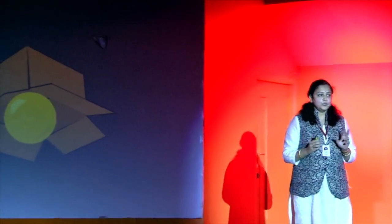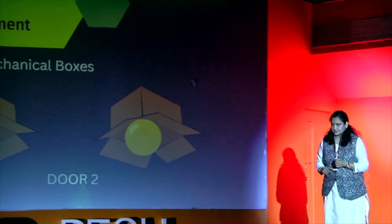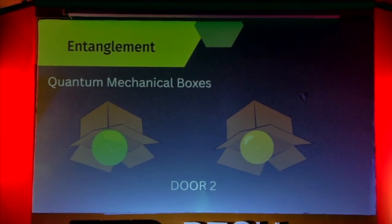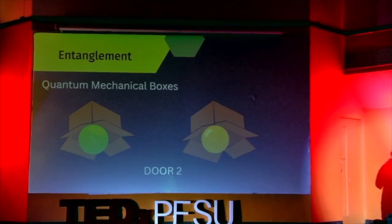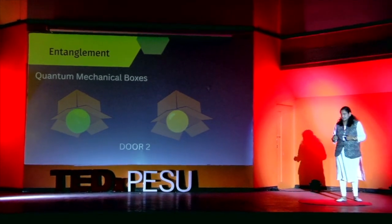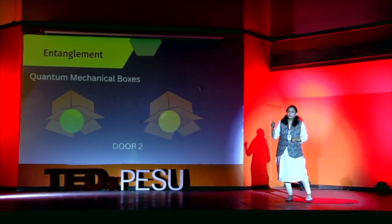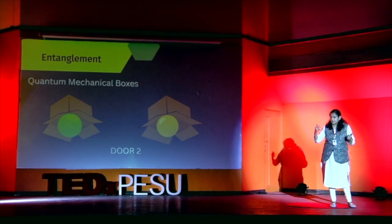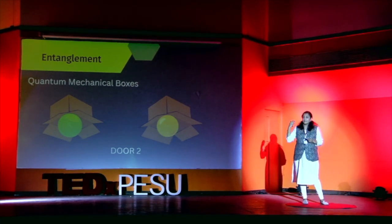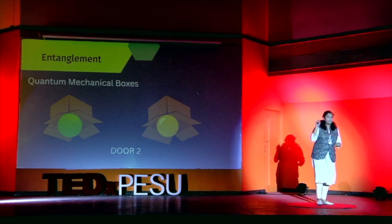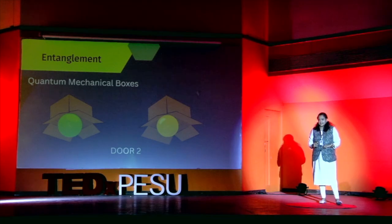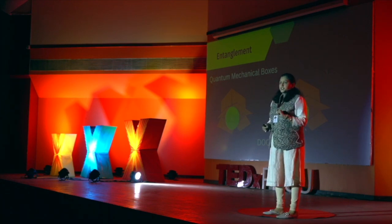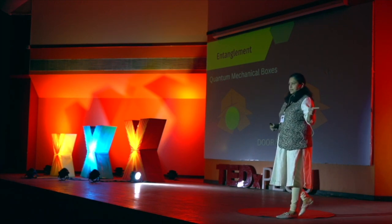So now we have introduced two superpowers: superposition and entanglement. A quantum state can exist in many states simultaneously, which gives exponential computational power to a quantum computing device. With one qubit I have two alternatives simultaneously; with two qubits, four alternatives; with 100 qubits, I have 2 to the power 100 alternatives simultaneously, and I can do computation in all these states simultaneously. The storage capacity of a quantum register is exponentially higher than a classical register.